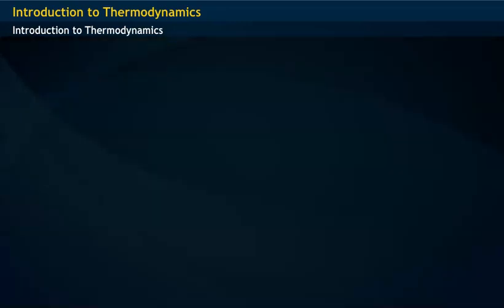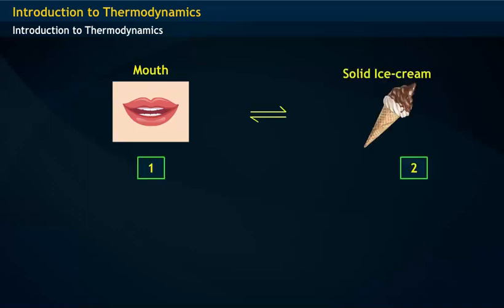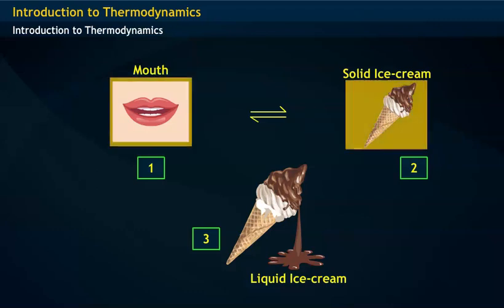In the entire process, there exist three systems: mouth, solid ice cream, and liquid ice cream. Initially, as mouth and solid ice cream are in contact with each other, they both exist in thermal equilibrium.